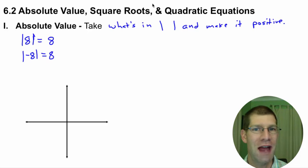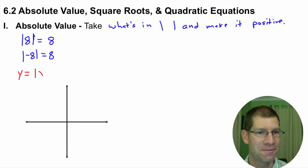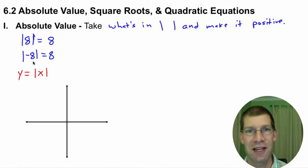For example, let's say you just have the question absolute value of 8. You take whatever's inside the absolute value and you make it positive. So absolute value of 8 stays as 8. If you have absolute value of negative 8, take what's in the absolute value sign, make it positive. So that also gives you an 8. Now I want to slip over to the graphing.